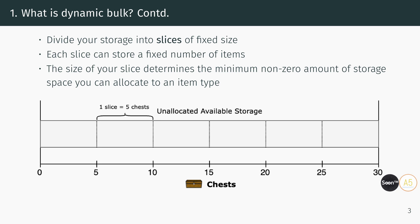To create a dynamic bulk system, the first step is to divide the storage capacity into fixed-size slices. Typically, a slice includes a couple of double chests, offering a capacity of about half a million to a million items. It's important to choose slice sizes wisely because it determines the smallest amount of storage that can be allocated to any item type. It wouldn't make much sense to have large slices if you only have a few of most item types.